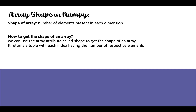The first question is: what is array shape in NumPy? The shape of an array represents the number of elements present in each dimension. To get the shape of an array, we can use the array attribute called shape. The result is a tuple where each index holds the number of respective elements.